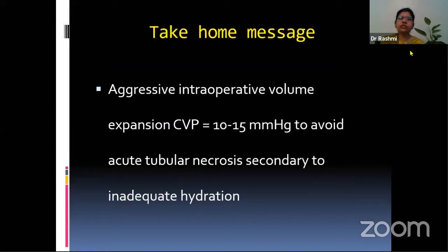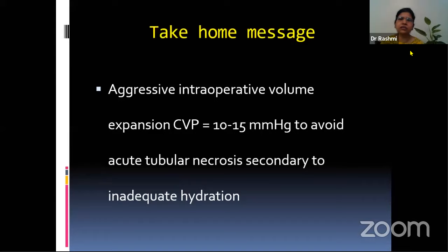The take-home message is aggressive intraoperative volume expansion. Raise the CVP to 10 to 15 — which is what the textbook says — but we can safely raise it to 20 to 25 if the patient is healthy and cardiovascular status is stable. This will help avoid acute tubular necrosis secondary to inadequate hydration. Watch out for hypovolemia and hypotension at the time of reperfusion, and we will have early graft function.